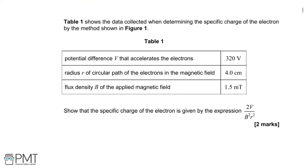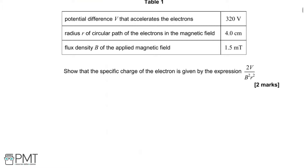Table 1 shows the data collected when determining the specific charge of the electron by the method shown in figure 1. You can see table 1 there with an accelerating PD of 320 volts, a radius of the circular path of 4 centimetres and a flux density B of this magnetic field of 1.5 millitesla. Show that the specific charge of the electron is given by the expression 2V over B squared R squared. To get to this we need to combine several equations together, so let's first write those down.